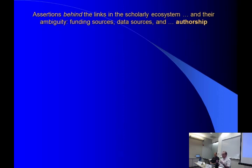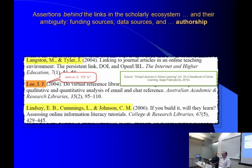Here, I'm focusing on the issue of authorship or creation. Traditionally, a typical bibliography lists authors by last name and first initial. By this method, how can we tell whether 'Langston M' here is the same 'Langston M' somewhere else? There could be many people with that name-initial combination. Or is 'Lindsay E.B.' the same as someone who just goes by 'Lindsay E' somewhere else? That's already difficult.